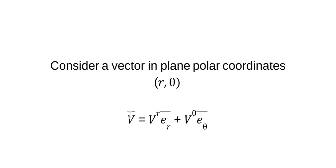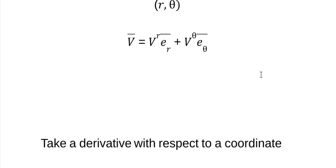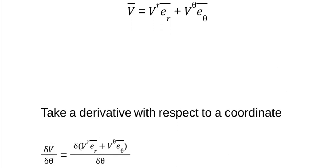So we got a vector in the plain 2D polar coordinates that we can expand as a linear combination of its components and its basis vectors, right? Now, let's take a derivative of this vector with respect to one of its coordinates, which is a directional derivative.